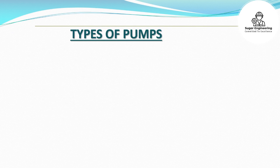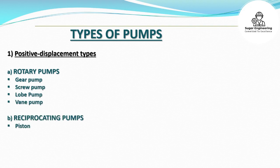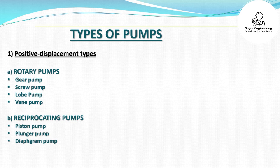Types of Pumps. 1. Positive Displacement Types: A. Rotary Pumps — Gear Pump, Screw Pump, Lobe Pump, Vane Pump. B. Reciprocating Pumps — Piston Pump, Plunger Pump, Diaphragm Pump.